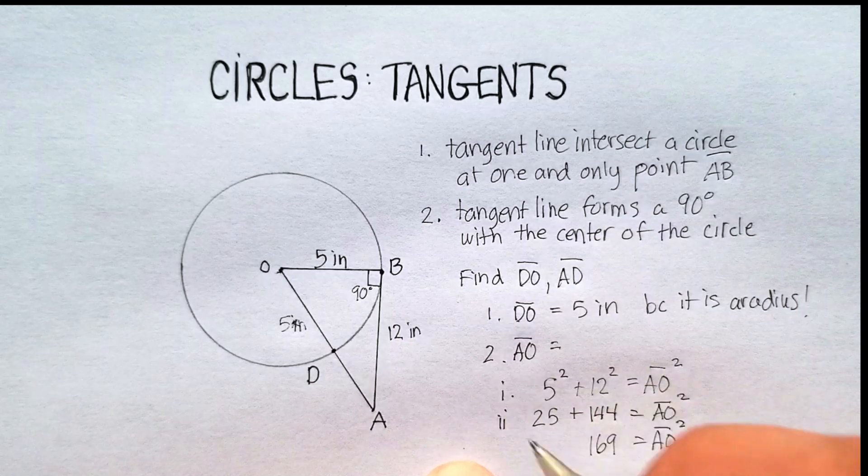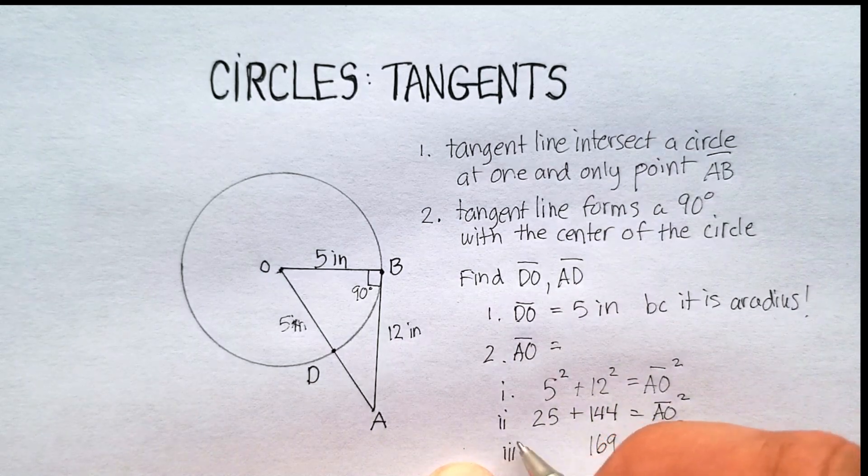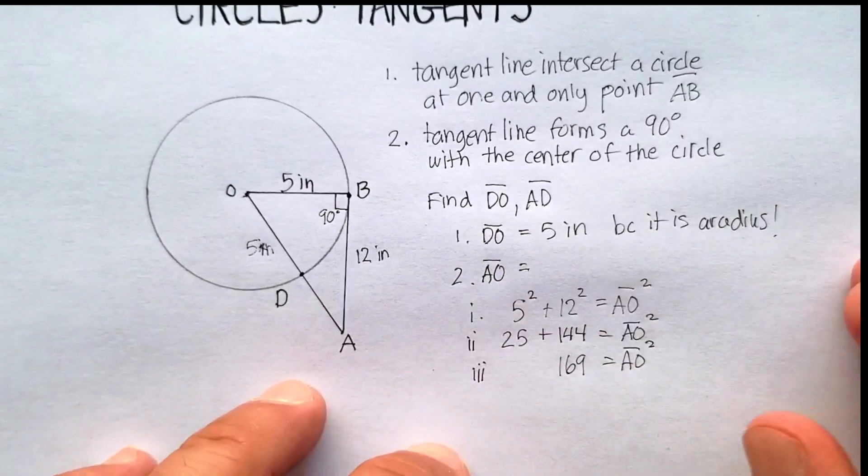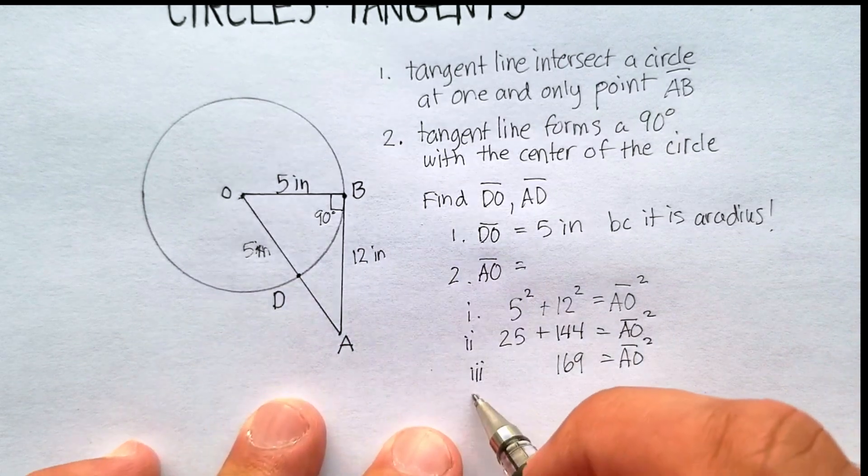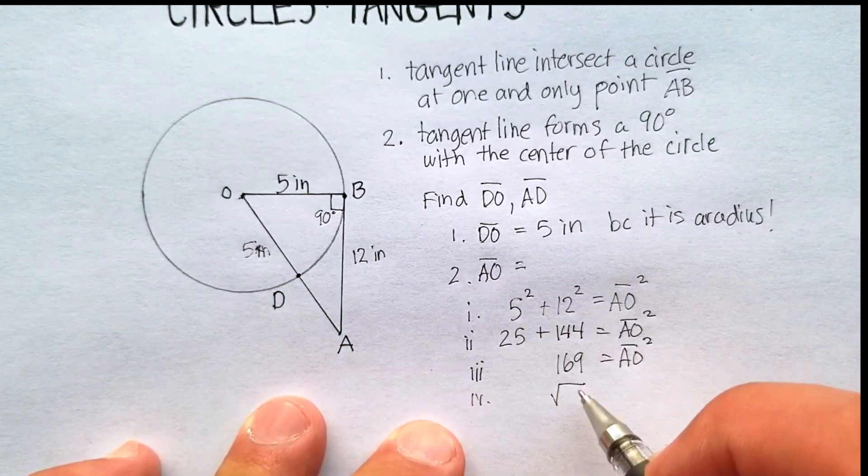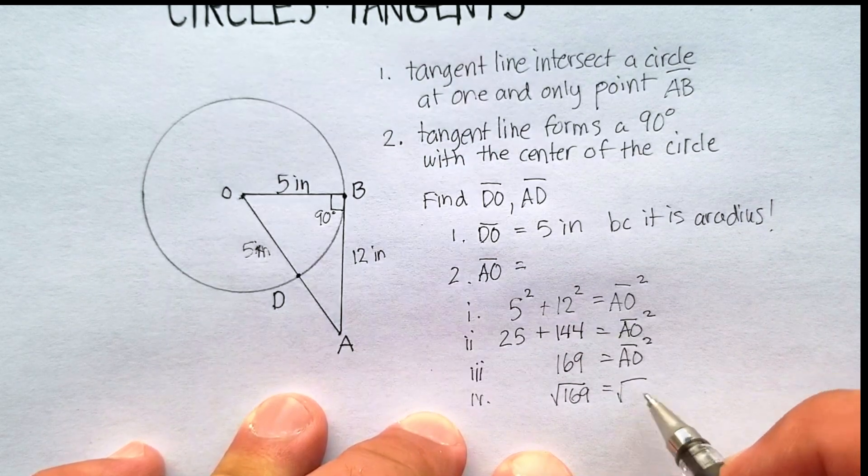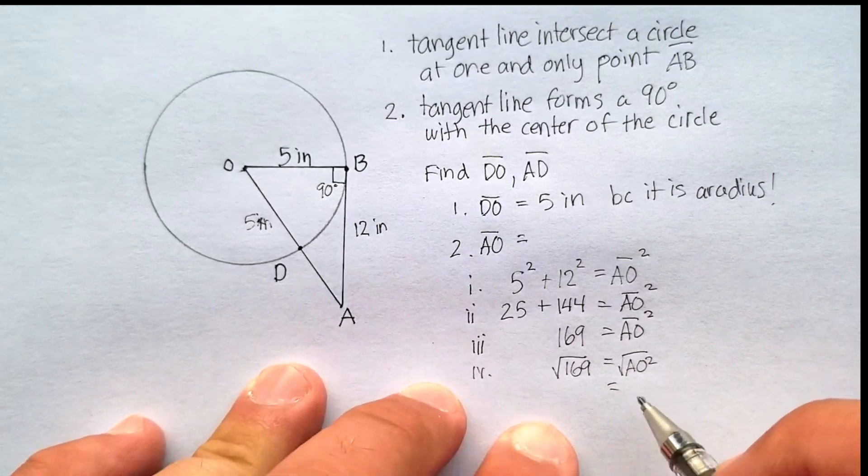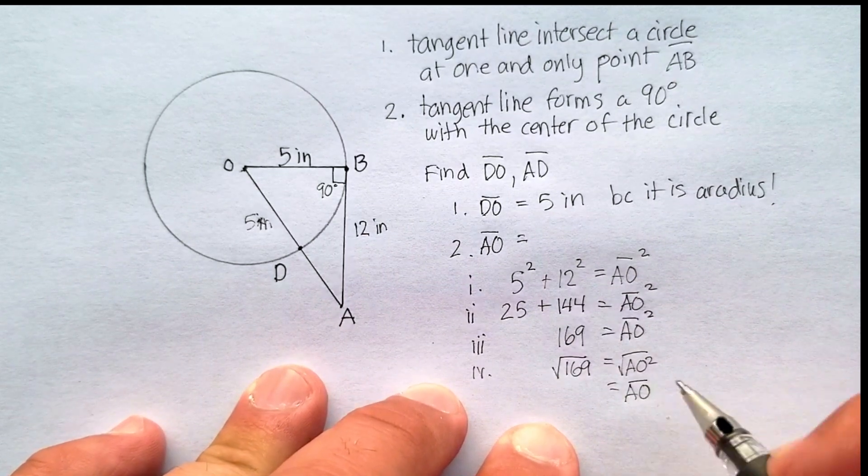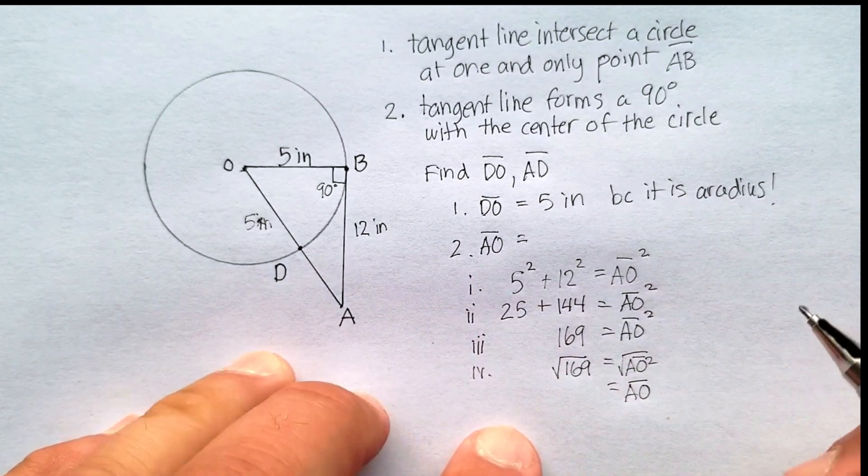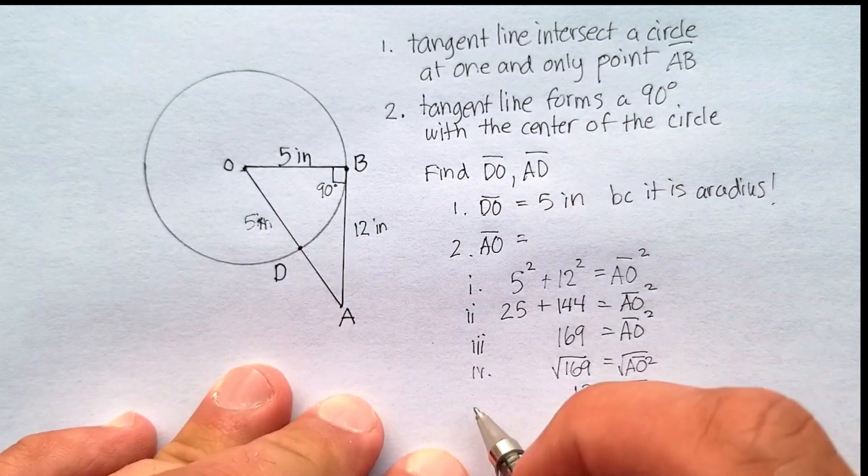We're going to take the square root of both sides. Let me just go ahead and put these steps in here, because I like to keep track of my steps. We're going to take the square root of both sides, and we're going to say the square root of 169 should equal A-O. And the square root of 169 happens to be 13.